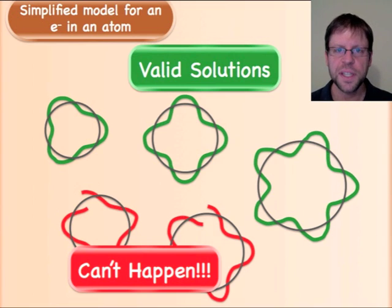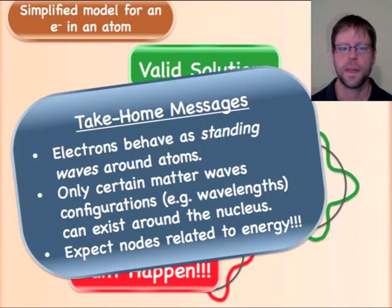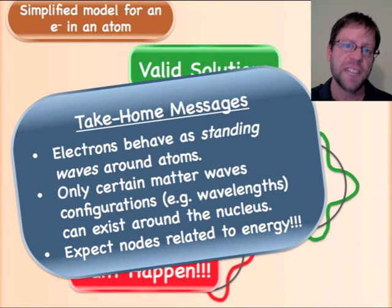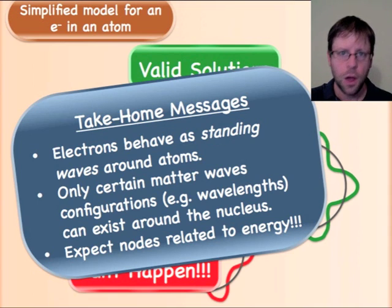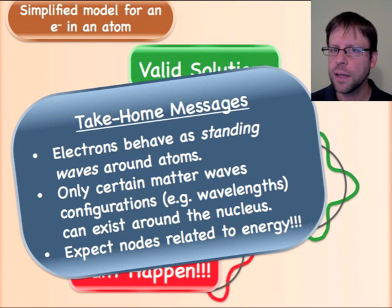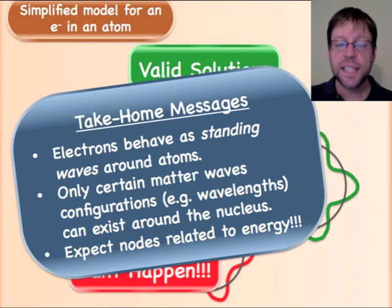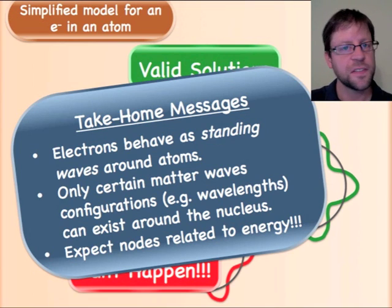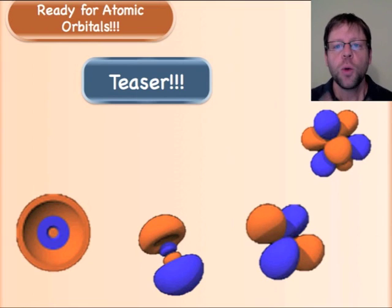And so you end up with this idea of quantized things where you can either be this picture or this one or this one, and they jump in energy. So again, the take-home messages are that we have electrons that act as standing waves. Only certain matter wave configurations can work, so that's what I was just showing on this last slide. You can't have any random wavelength or any random type of wiggle that will work. You have to be very particular and only certain ones are valid. And lastly you have to remember that the number of nodes is very related to the energy, that will be related to the energy of an electron as well.